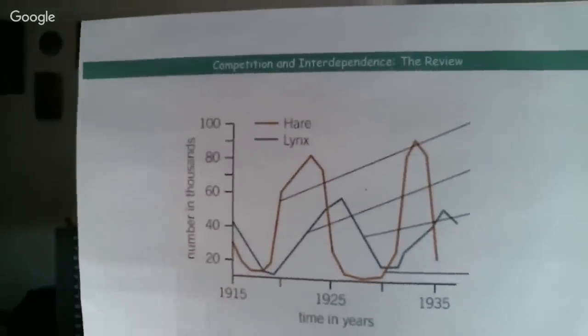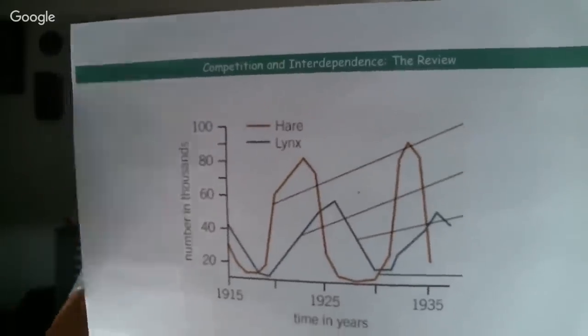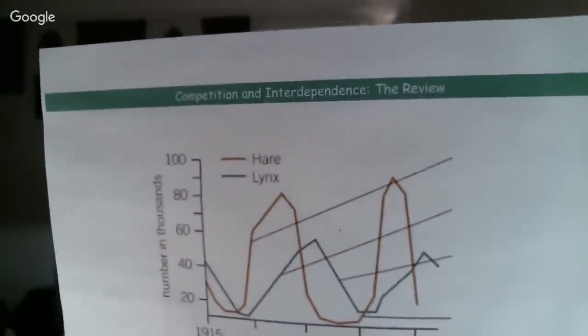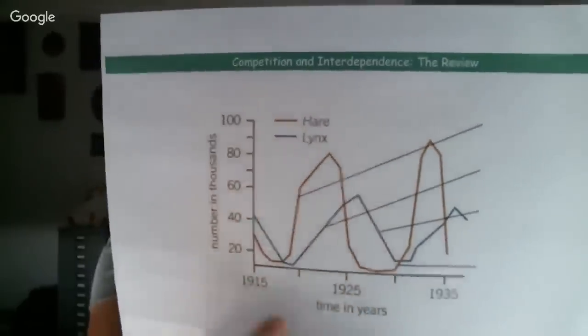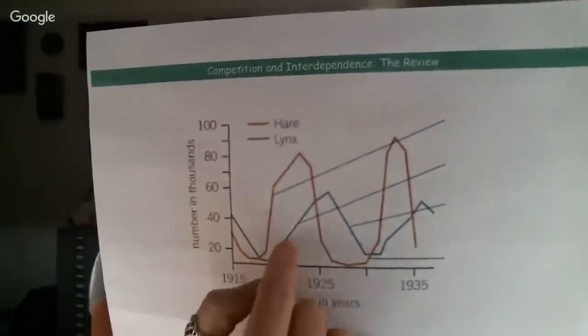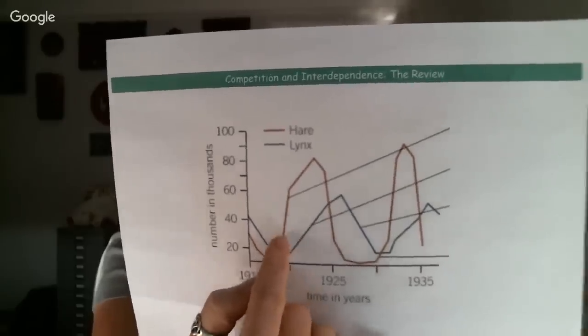Predation is where we've got predators and prey. They love asking about the graph showing the relationship between predator and prey numbers. When describing it, we say the red line is the hare (our prey) and the blue line is the lynx (our predator). As the prey line increases, the predator line increases, and when the prey decrease, the predators decrease. The second mark is for talking about the lag — the delay between the effect on one and the other. If it's an explain question, you'd talk about more prey meaning more food for predators so they increase, and fewer prey meaning less food so they decrease. Make sure you mention the lag.